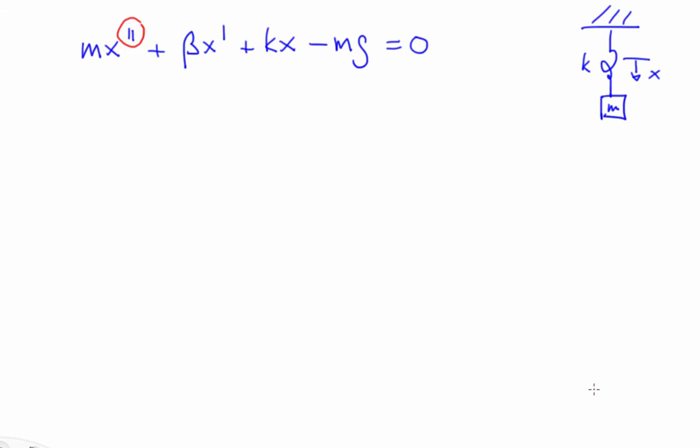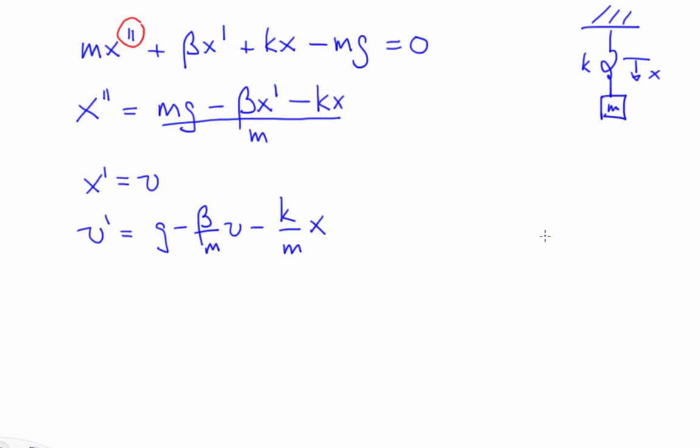The first step in this procedure is to get that highest order term on the left-hand side of the equation by itself, like this. Then you define yourself a helper variable, like this. The third step is to rewrite the whole equation using the helper variable, like this.